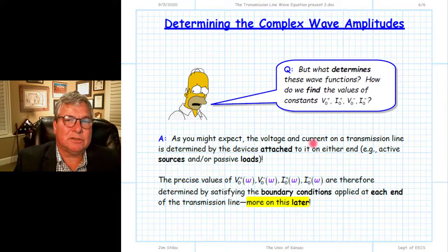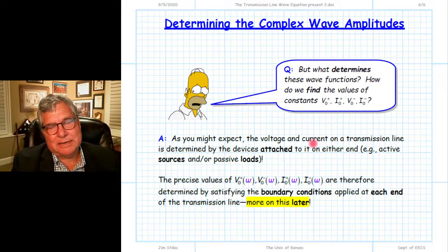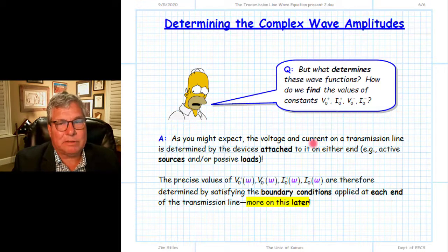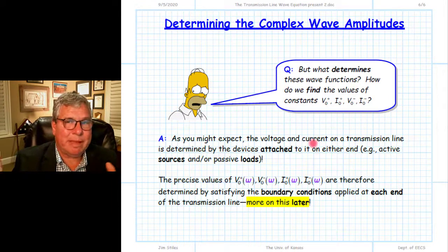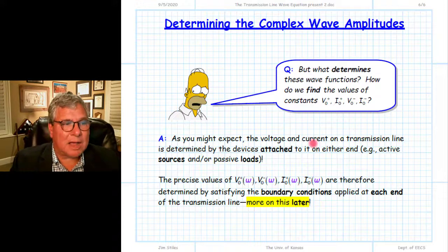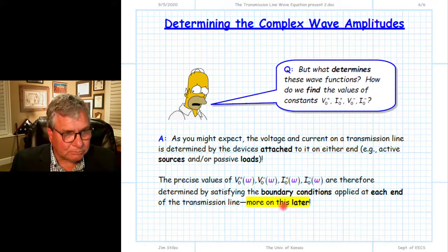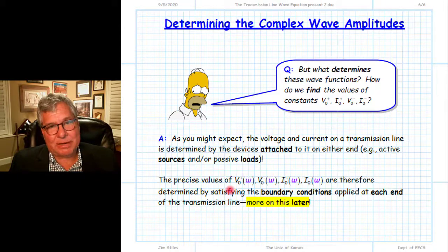How do we resolve the constants involved in the solutions to our differential equations? We apply boundary conditions — by knowing the current or voltage at a specific point. In the case of a transmission line, our boundaries are easy to see: one boundary is one end of the transmission line, and the other boundary is the other end. What is connected to either end will determine what those four complex constants must be. Once we apply the boundary conditions and find those complex values, we know the voltage and current at each and every place along the transmission line.